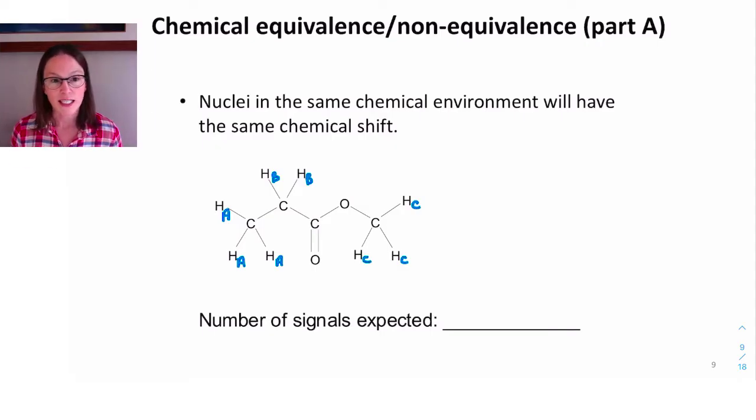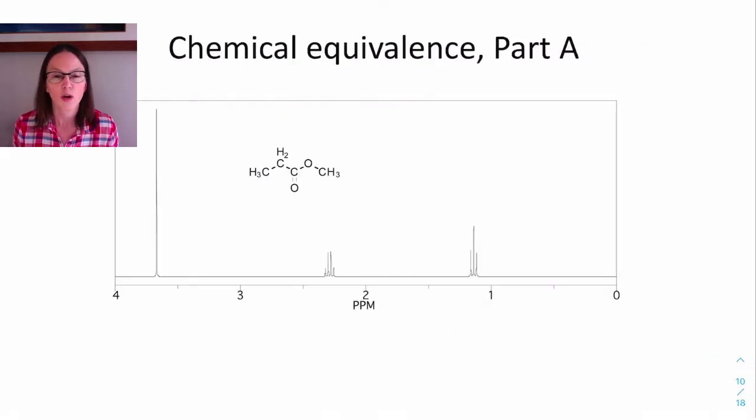Therefore, we expect to see three signals in the proton NMR spectrum for this molecule, which is indeed what we do see. Remember that we call these protons A, these protons B, and these protons C.